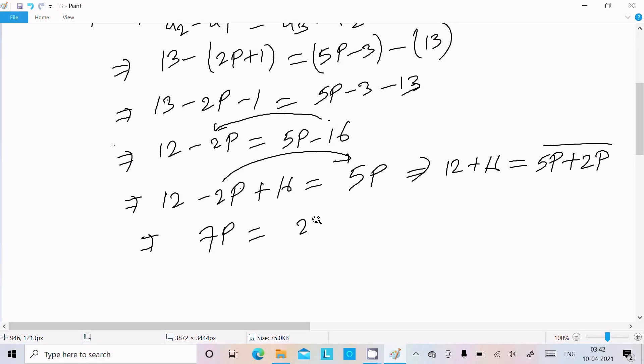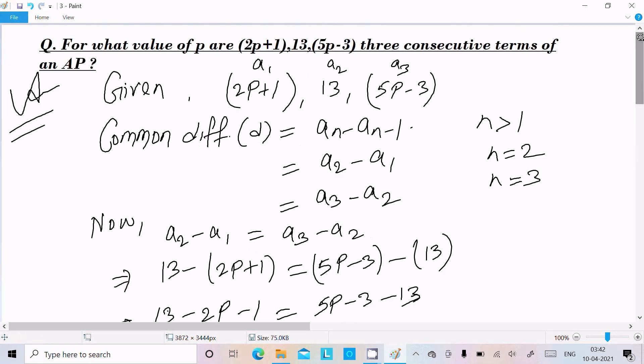7p equal to 28. Now here we can write p equal to 28 divided by 7, it cancel by 4 times. Here p value is 4, is the correct answer of this question.